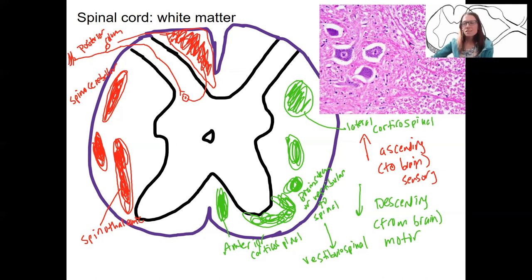Okay. So again, the main important thing right now is that these different tracts of white matter contain bundles of axons with common origins and common destinations and common functions.